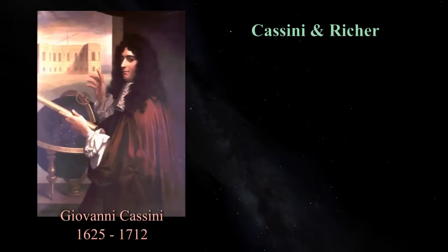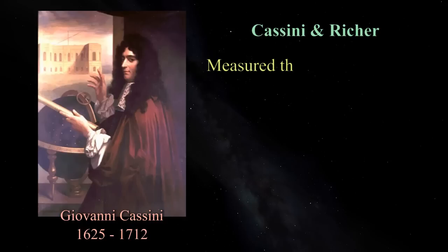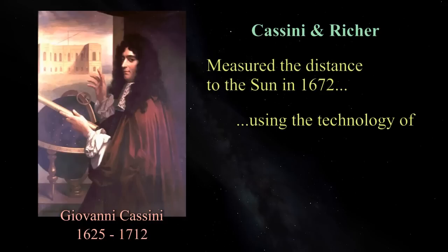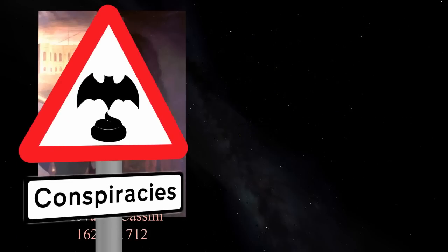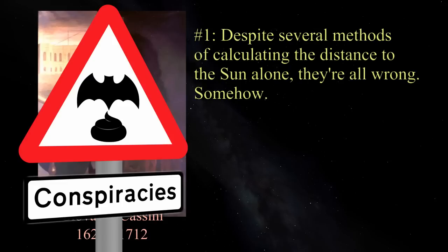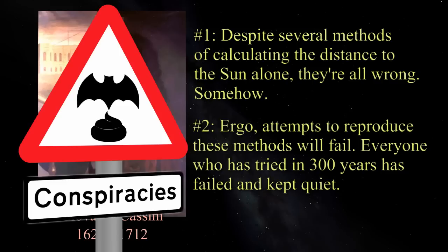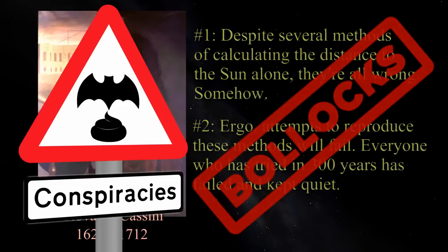Cassini and his colleague Richet made the first proper job of calculating the distance to the Sun. Cassini stayed in Paris and Richet went to Cayenne in French Guiana. They calculated the distance to Mars from their two vantage points using parallax when Mars was at opposition. The distance to the Sun could then be derived as the size of Mars orbit relative to Earth's was known by Kepler's third law. Cassini's result was accurate to within about 7%. Not bad for 1672.